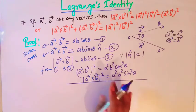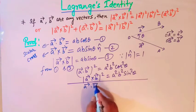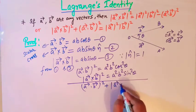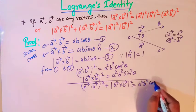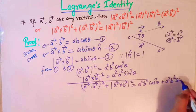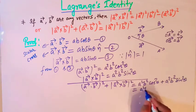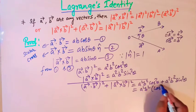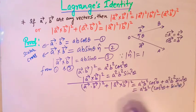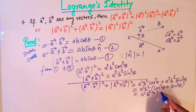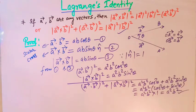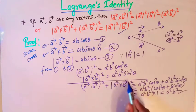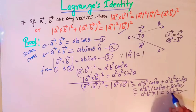Now if we add both these equations, we get (A·B)² + |A×B|² = A²B² cos²theta + A²B² sin²theta. Taking A²B² common, we get A²B²(cos²theta + sin²theta), which equals A²B² times 1, that is A²B². So the required identity is: the square of the dot product of A and B plus the square of the magnitude of A×B equals A² times B².